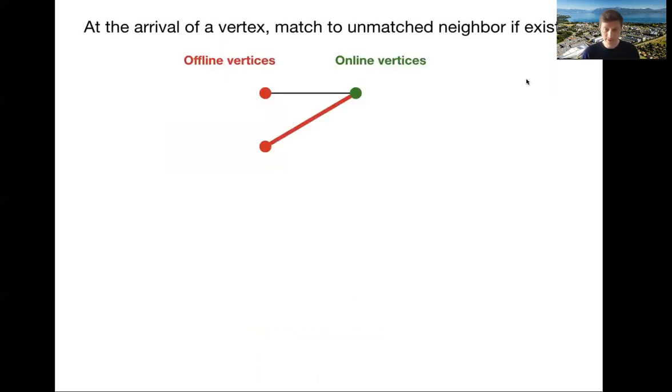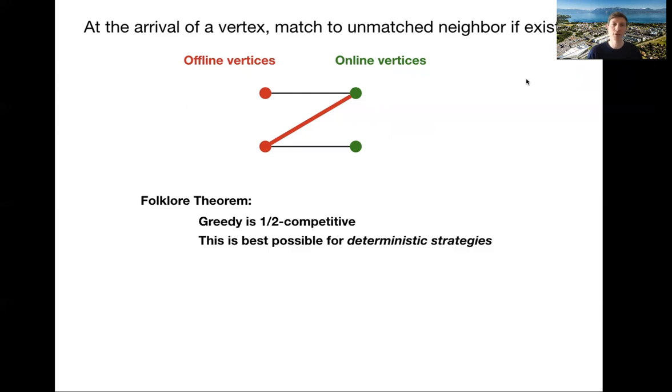So as an example, I have an offline vertex. When this vertex arrives, I see that it has three neighbors, so I match it to one of them. Now another vertex could arrive and say, oh, I cannot match this guy anymore because he already is matched. So here you can see the optimal matching is of size two, whereas our matching is only of size one. If you think for a while, this is the worst thing that can happen to such a greedy algorithm. And it's a folklore theorem that greedy is one half competitive and you cannot do better by using deterministic strategies.